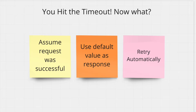The third option, and this is the one that is used more often, is to retry automatically. That means if service B does not get back to you within five seconds, you kick up another request, wait a further five seconds, and you can keep on retrying for a number of times. There are other trade-offs with retrying multiple times, but that is one of the very common practices.